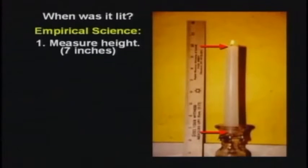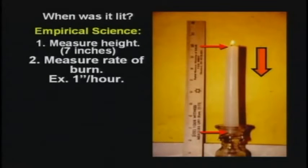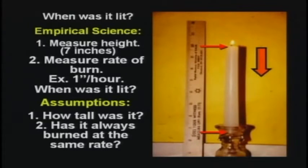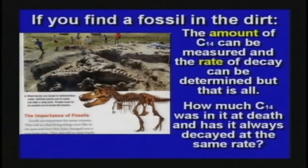Suppose you walked into a room and saw a candle burning on a table. When was it lit? It's seven inches tall. We measure how fast it's burning and agree: the candle is burning an inch an hour. Seven inches tall, burning an inch an hour — when was it lit? Nobody can figure it out unless you make some assumptions. Assumption number one: how tall was the candle? And assumption number two: has it always burned at the same rate? Neither of those can be known. If you find a fossil in the dirt, the amount of carbon can be measured and the rate of decay can be determined. But how much was in it when it lived? Has it always decayed at the same rate? Has it been contaminated sitting on the ground? There's no way to know those things.